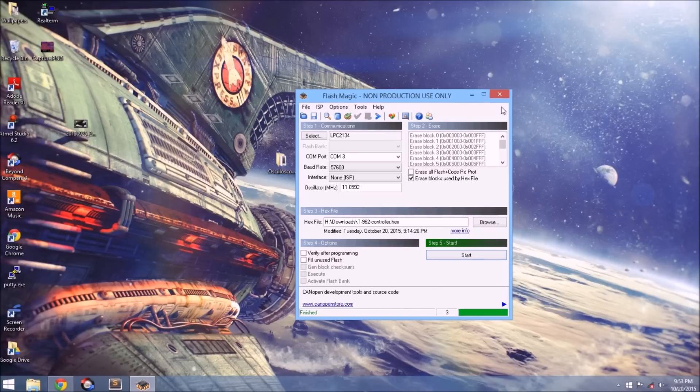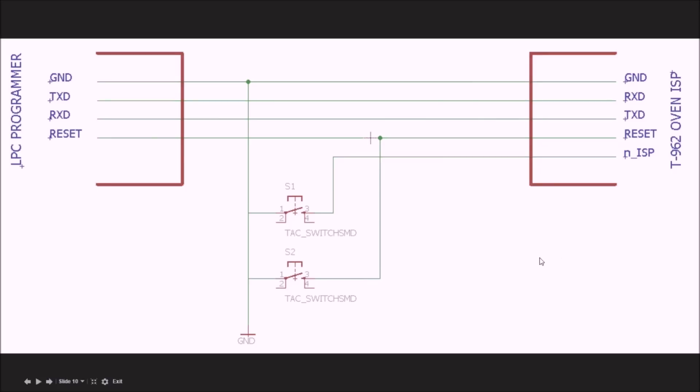Plug in the power cable into the T962 and flip the switch. When the oven powers on, do the following steps with the buttons. Press the NISP button to short NISP to ground, then press the reset button. Release the reset button, and then release the NISP button. This sequence of grounding those nodes will place the microcontroller in bootloader mode, at which point you should be set to flash the application.